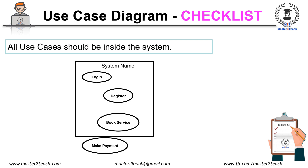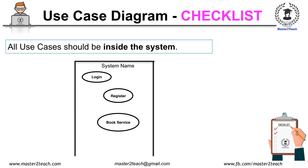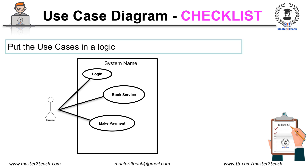All use cases should be inside the system, which is represented by a rectangle box. Close the system box at the end of drawing if you are drawing on paper. Check whether all the use cases are inside the system box or not. It's good practice to put the use cases in a logical order where possible — like login, then book service, then make payment — because users will call these use cases serially, making the flow easy to understand. Check whether the use cases are in logical order or not.